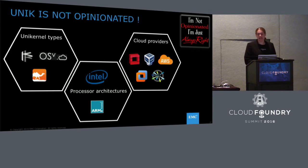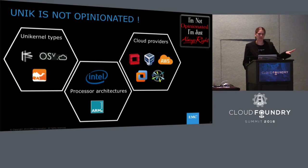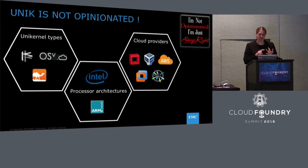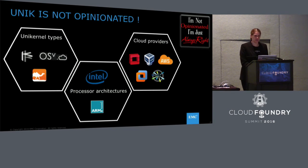We didn't want to be Intel-specific because my belief is that the big use case for Unikernel will be in the Internet of Things. No one will argue that this is the best fit for IoT — very small footprint, very performant, and very secure. These three qualities make it a perfect fit. This is why we decided to support ARM as well, to show that it can run on embedded devices.